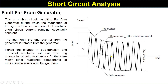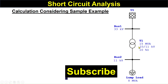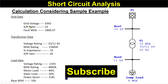Now we will take a simple example. Here is a grid with a 33 kV bus and an 11 kV bus, with a transformer of 15 MVA, 33/11 kV, and 10% impedance, and a lumped load of 8 MVA. The data you need includes: grid data (voltage 33 kV, X/R ratio, fault MVA), transformer data (voltage rating, MVA rating, percentage impedance, X/R ratio), and load data (voltage rating, MVA rating, motor/static load, power factor, and base MVA).